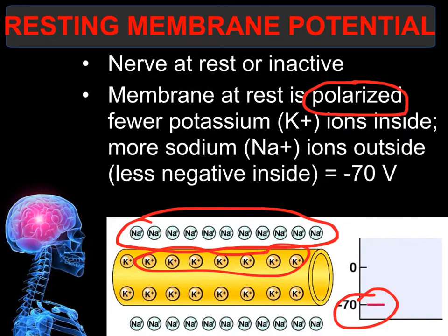Because of this negative charge at resting potential, the nerve is termed polarized — polar refers to a charge — which means that when there is a charge to the nerve, it is considered polarized.